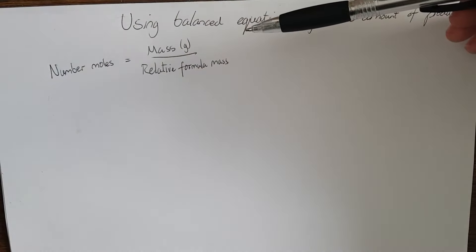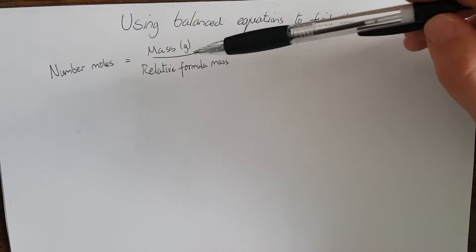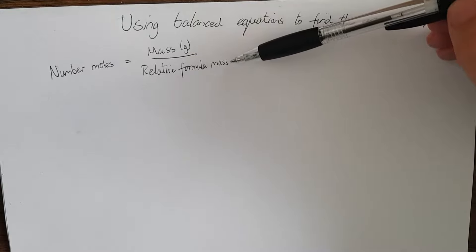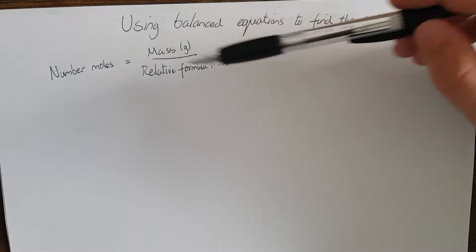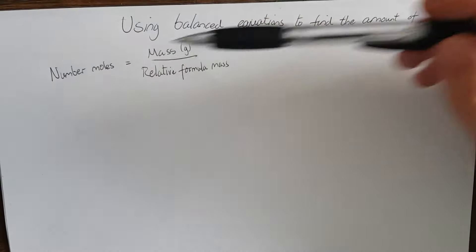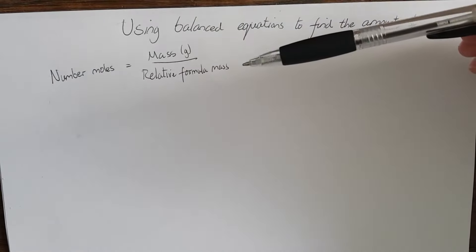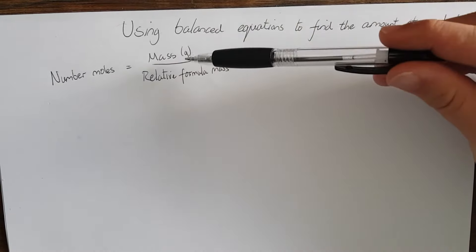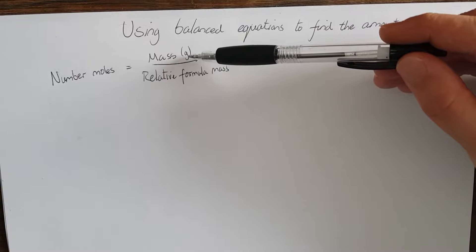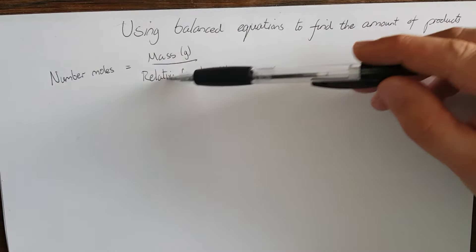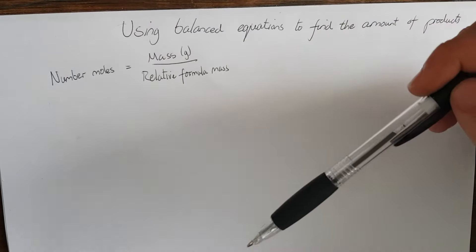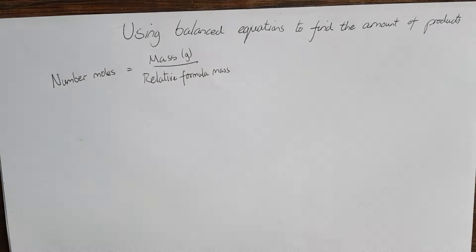We can rearrange this equation any way we want. If we wanted to find the relative formula mass, we'd rearrange it to make relative formula mass the subject, so relative formula mass equals mass in grams divided by the number of moles. If we wanted to find the mass in grams, we'd rearrange the formula to get mass in grams equals number of moles multiplied by the relative formula mass.